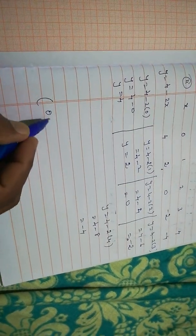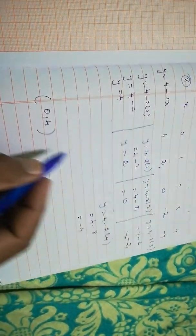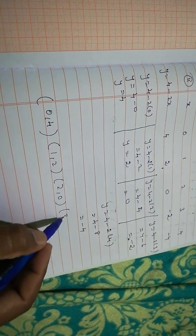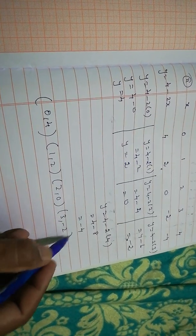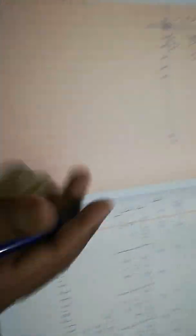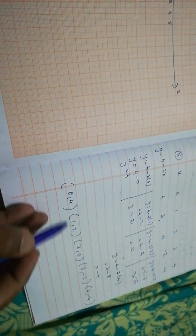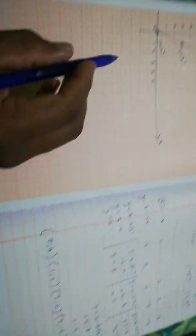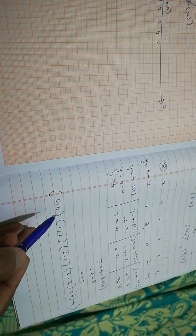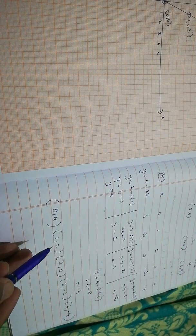So the coordinate points are: (0,4), (1,2), (2,0), (3,−2), and (4,−4). Plot these points on the graph. The x-axis goes from 0 to 4 or 5, and you need to extend the y-axis downward to include negative values.